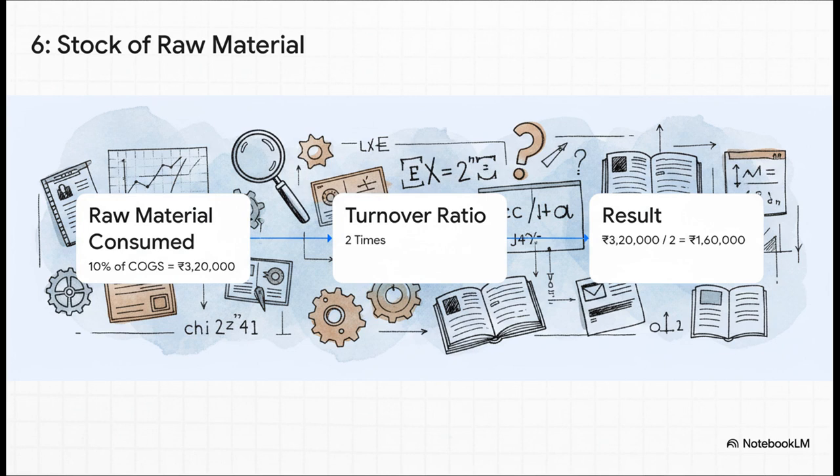Now that we have cogs nailed down, we can find our inventory values, starting with raw material. We're told raw material consumed is 10% of cogs, so that's 3,020,000. Then, the turnover ratio of 2 tells us how efficiently this material is being used. So, we just divide the consumption by the turnover, and we find the stock sitting on hand, 1,060,000 rupees.